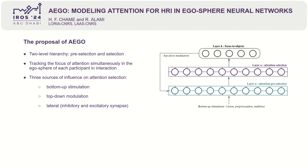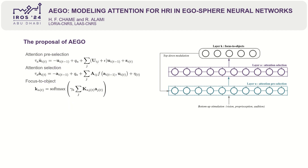The architecture is able to take into account three sources of influence on attention selection, which are bottom-up stimulation, top-down modulation, and lateral inhibitory and excitatory synapses. Here I present the main equations of the dynamic system at each layer of the architecture and invite you to consult more details in the article.